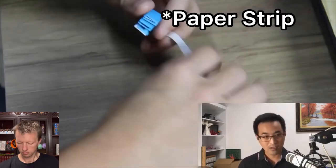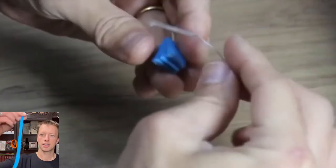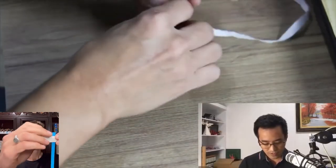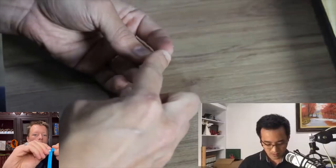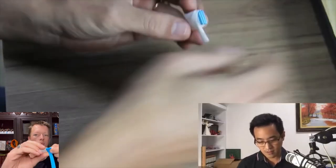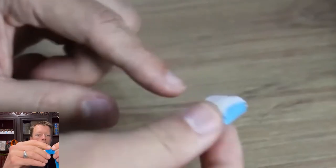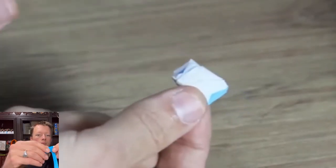You take one paper stripe like this one. You roll the part where you want to hold the shape. And after you roll the paper, you do something like this. You just apply a drop of water here and here and let it dry.